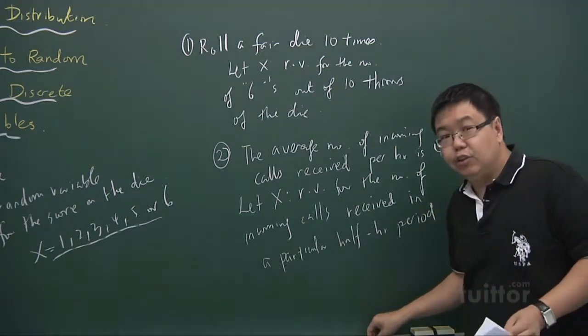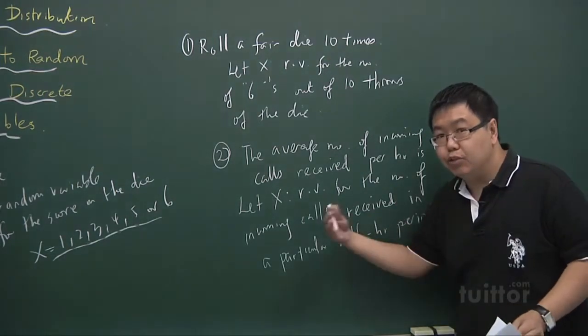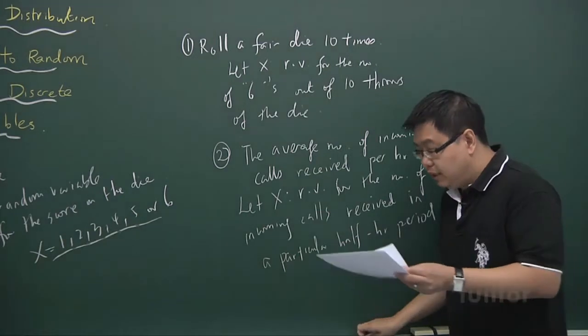Then in that case, we can say that x is also a discrete random variable, because it takes values from 0, 1, 2, 3, 4, and so on.